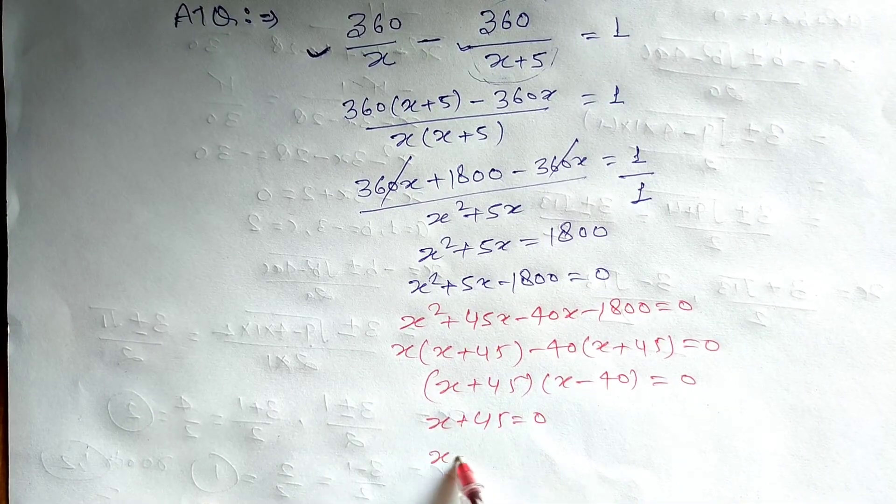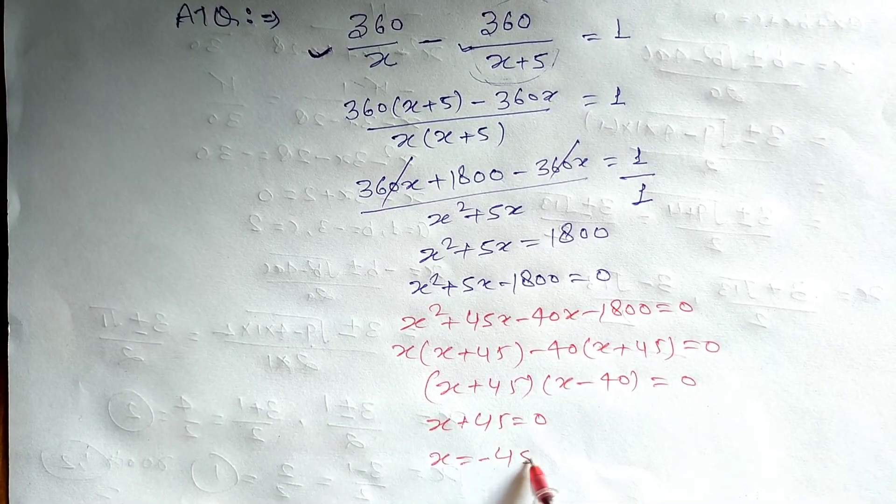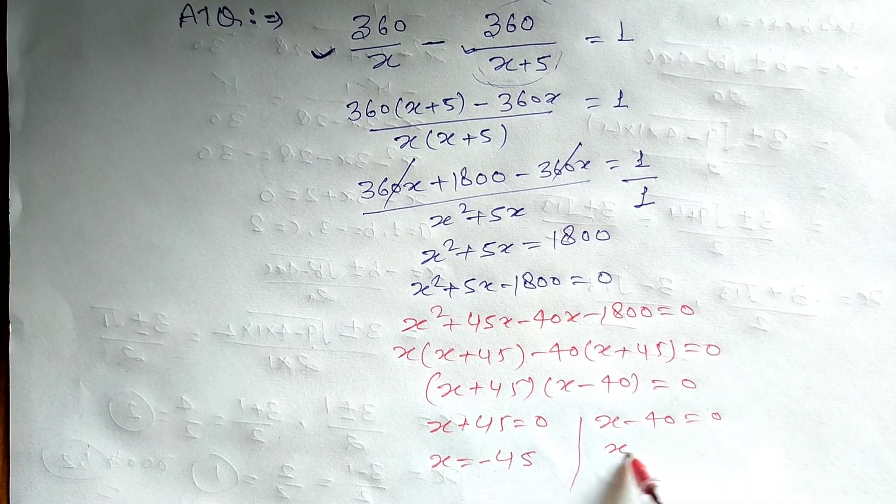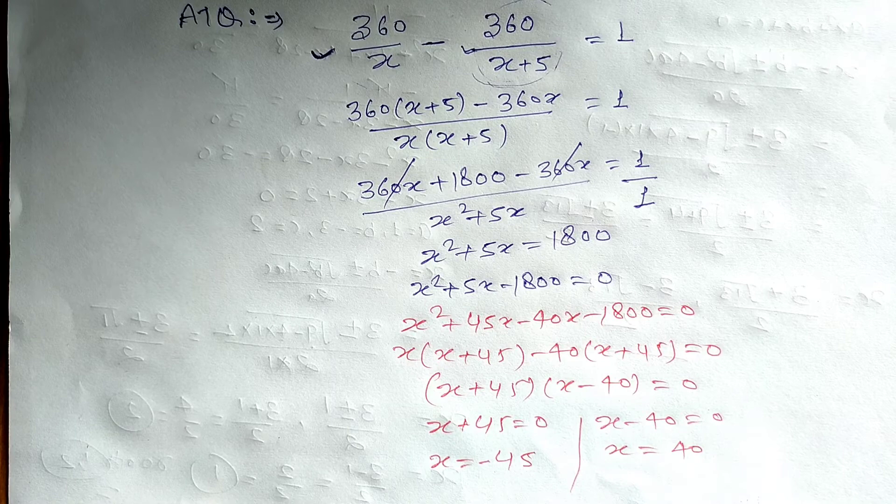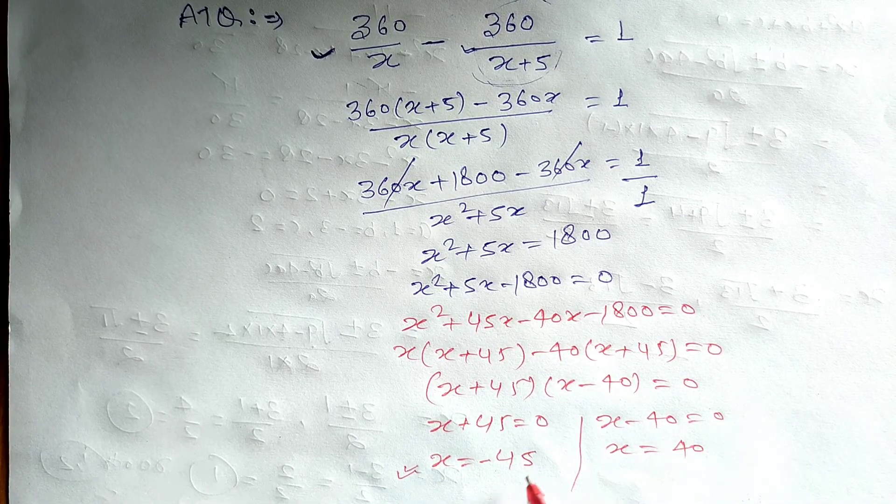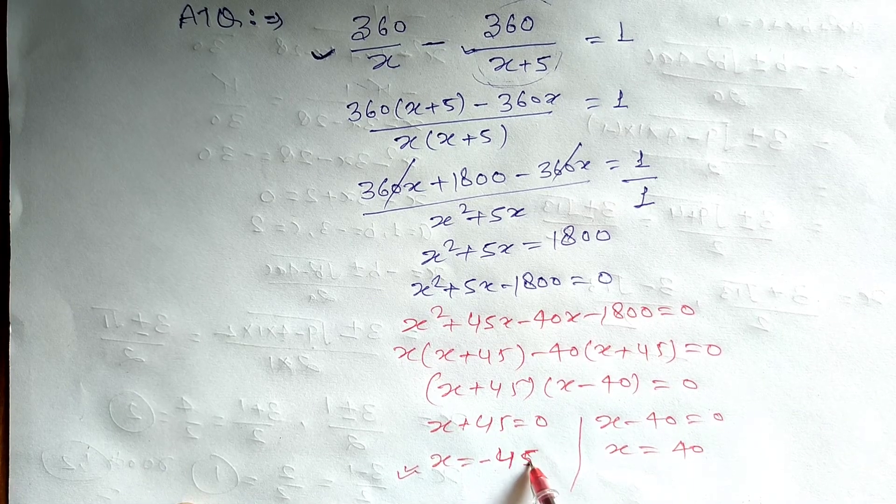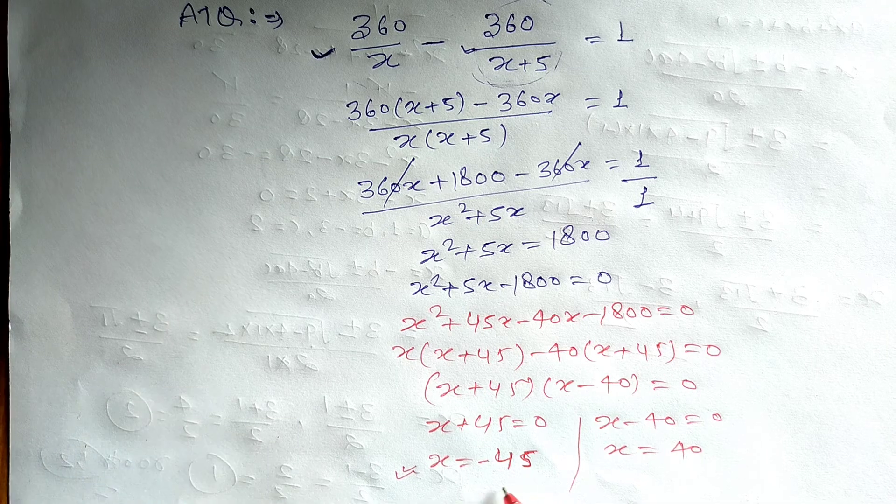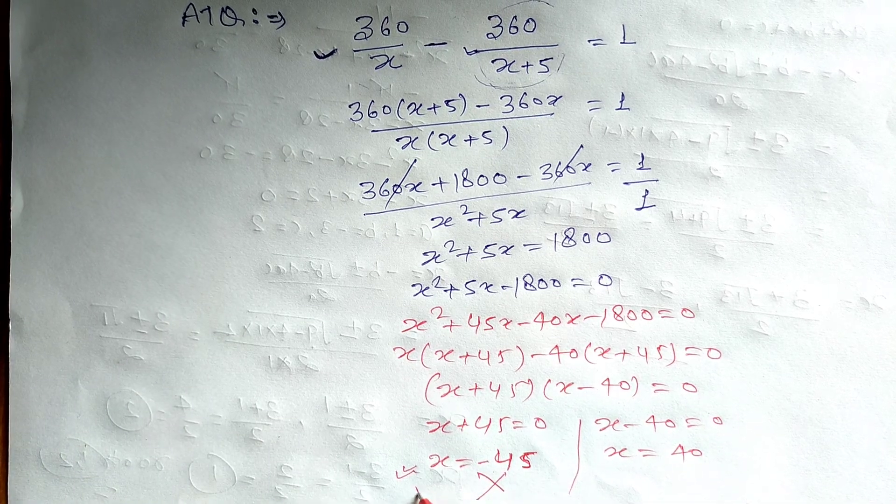The values from the numbers are x minus 40 and x is equal to 40, and then x is considered the speed of the train. Kisi bhi cheez ki speed, kisi bhi car ya bike ki speed ya to zero hogi ya to something positive hogi. Negative nahi hogi. So ye cancel, answer nahi hai.